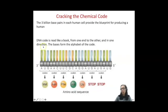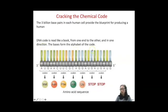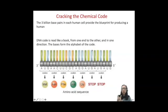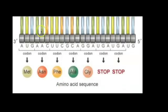This DNA code is read like a book from one end to the other in one direction. The alphabet is not our standard 26-letter alphabet — it's just those four letters, those four nucleotide bases, over and over. What they build are not words, but three-letter codes that become amino acids that then build proteins. Three bases at a time are called a codon, and the codon is equivalent to one amino acid. The amino acids are the monomers of proteins.